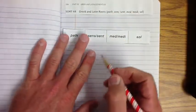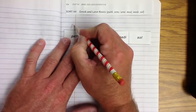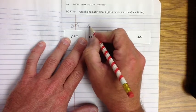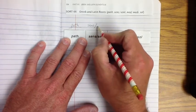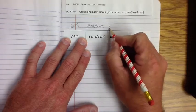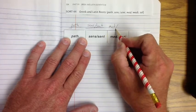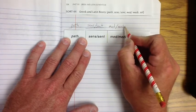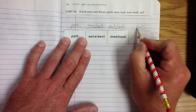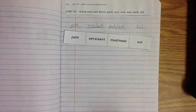And we're going to start over here with path, P-A-T-H. Go ahead and underline that. And we got S-E-N-S and S-E-N-T. Go ahead and underline that. Got M-E-D and M-E-D-I. Underline those. And then we have S-O-L. So we're going to talk about these.